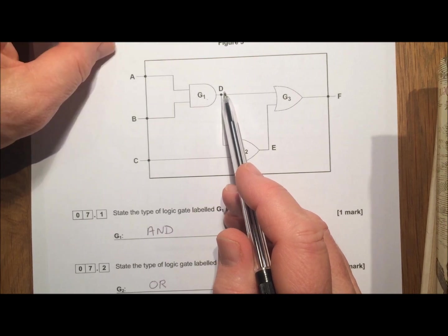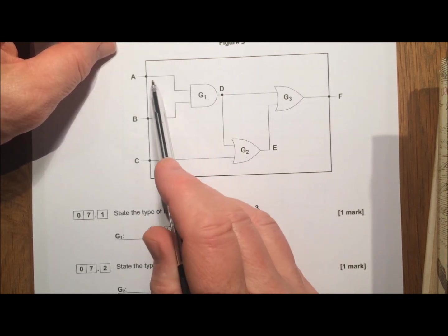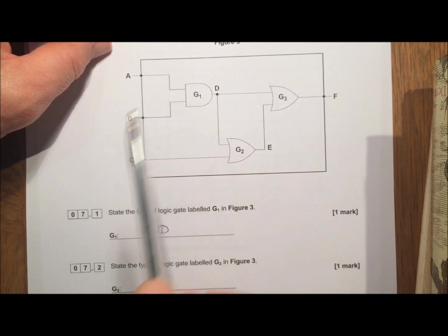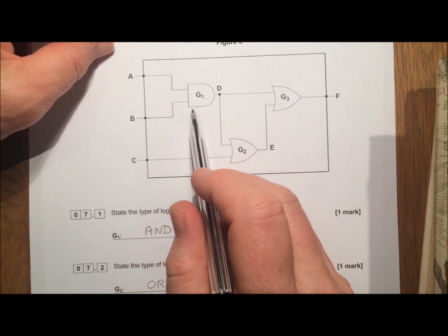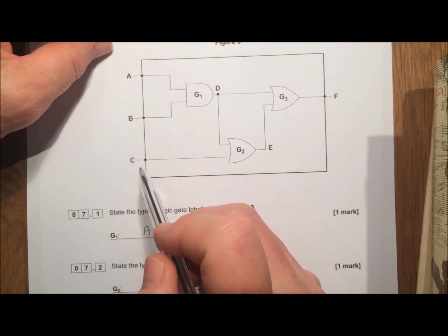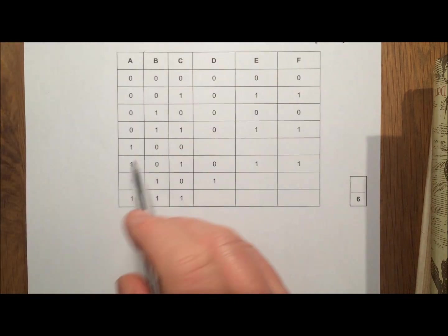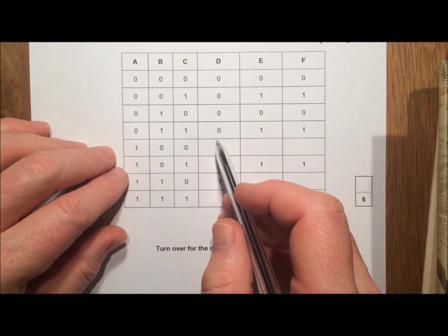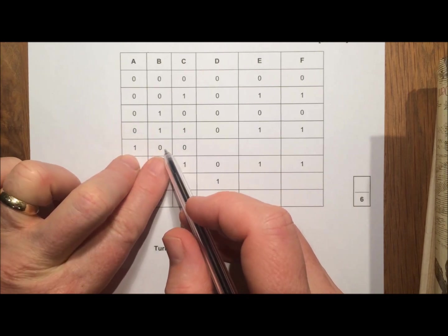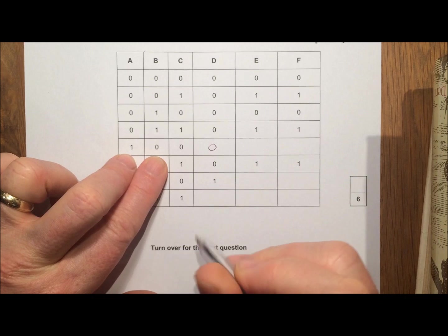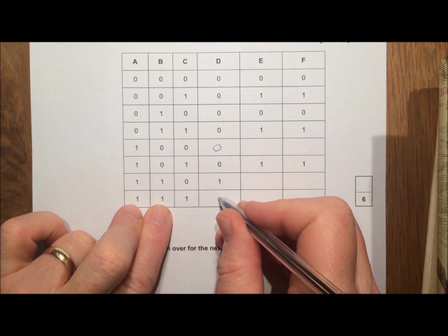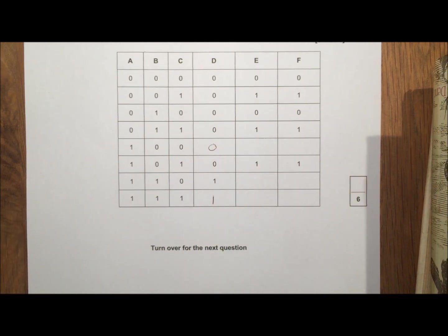D is the output from the AND gate from A and B. So A and B make D. Remember an AND gate produces a 1 if both the inputs are 1, otherwise it's a 0. So D will only produce a 1 if A and B are both 1. So in this case A and B are not both 1, so that must be a 0. In this case A and B are both 1, so that will be a 1. Okay, easy enough.